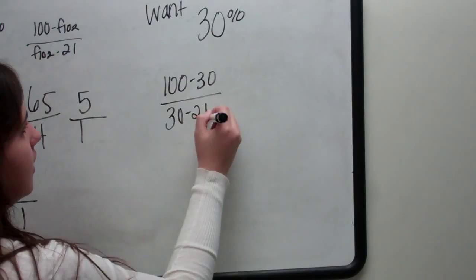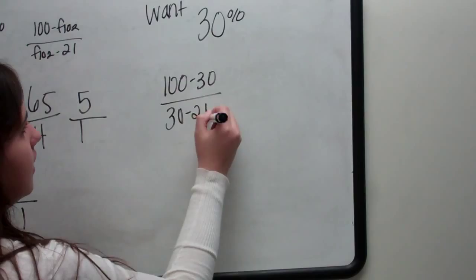For 30%, you do the exact same thing. 100 minus 30 divided by 30 minus 21, which is going to give me 70 divided by 9, which is going to give me a ratio of 8 to 1. So I have an air to oxygen ratio for 30% of 8 to 1.